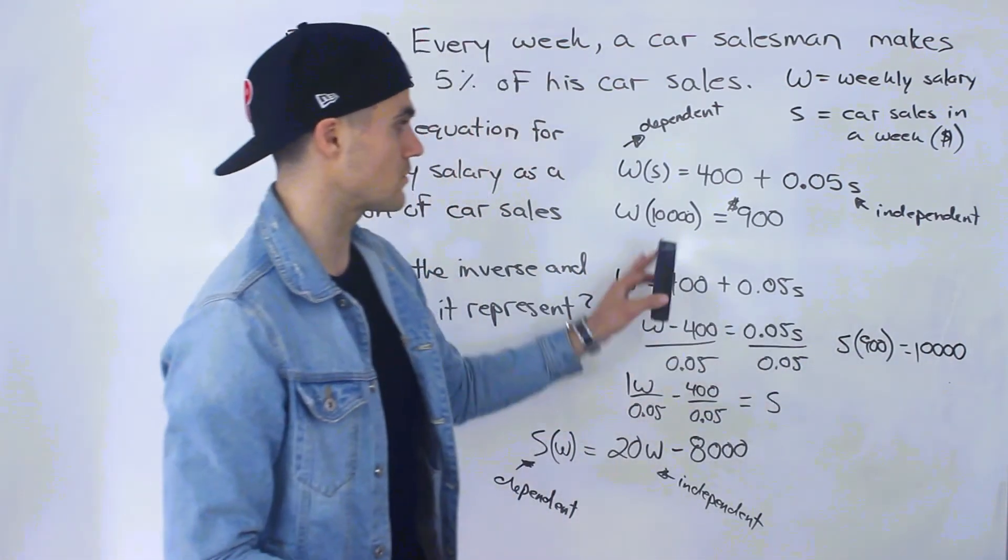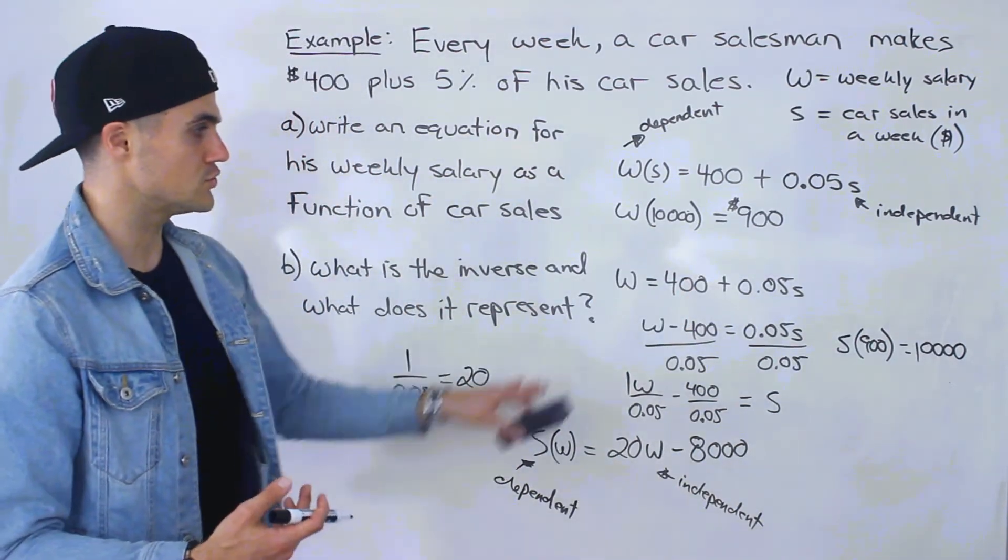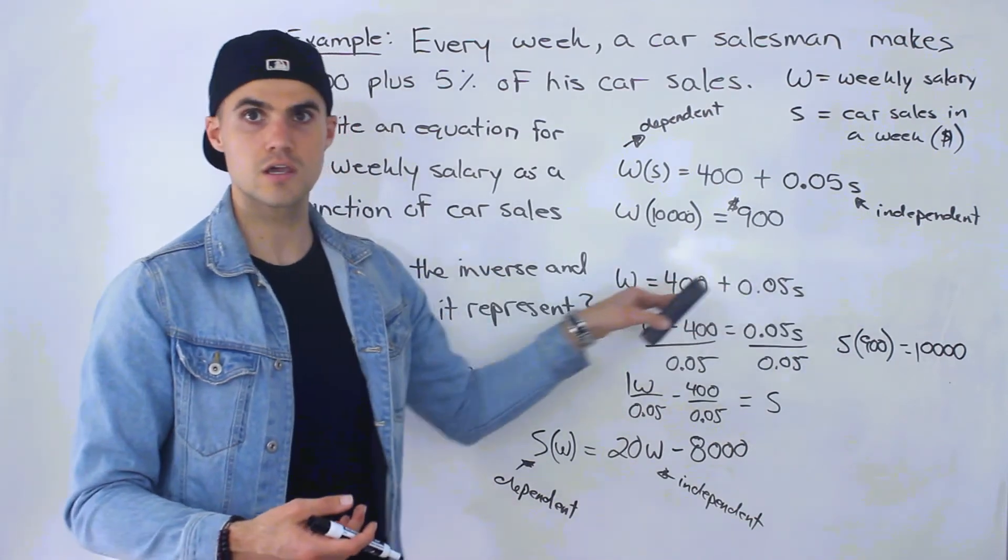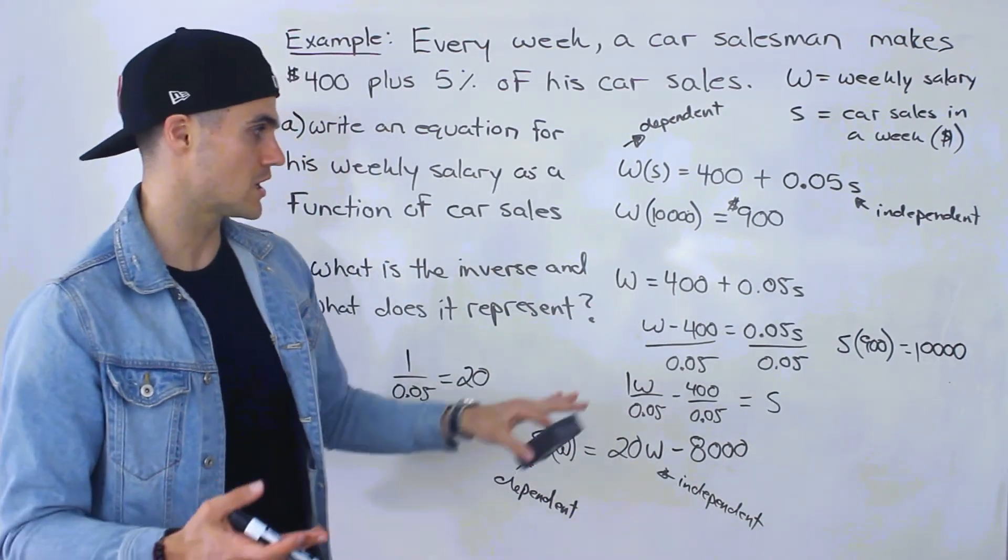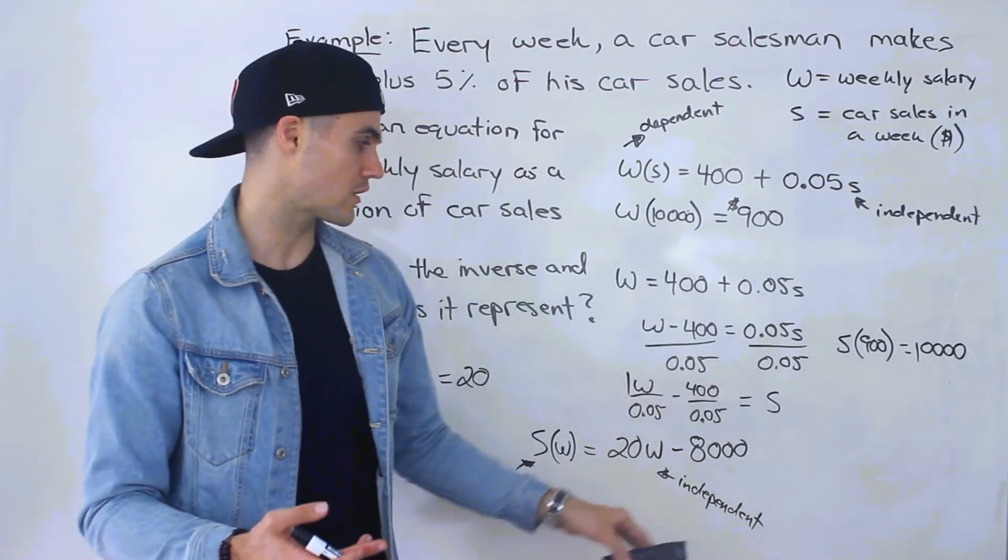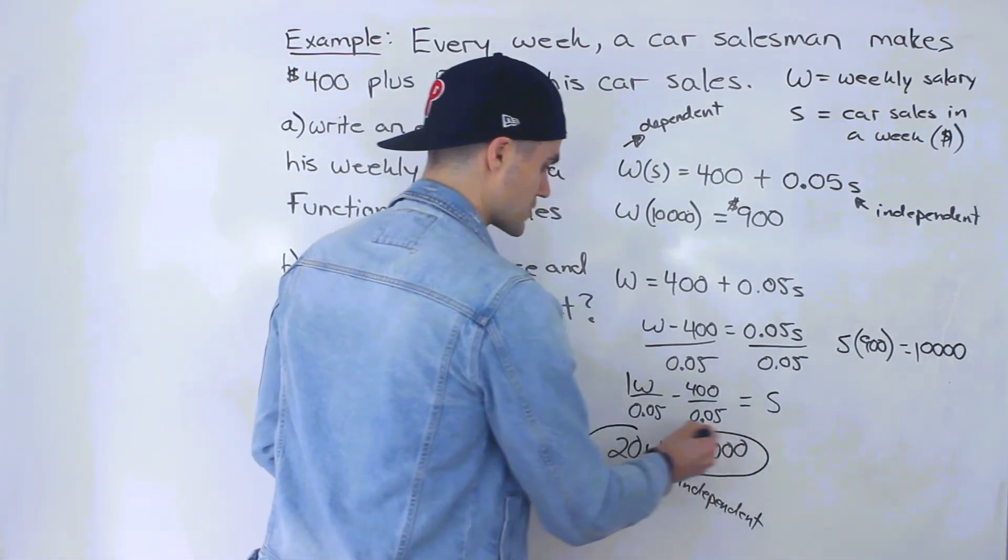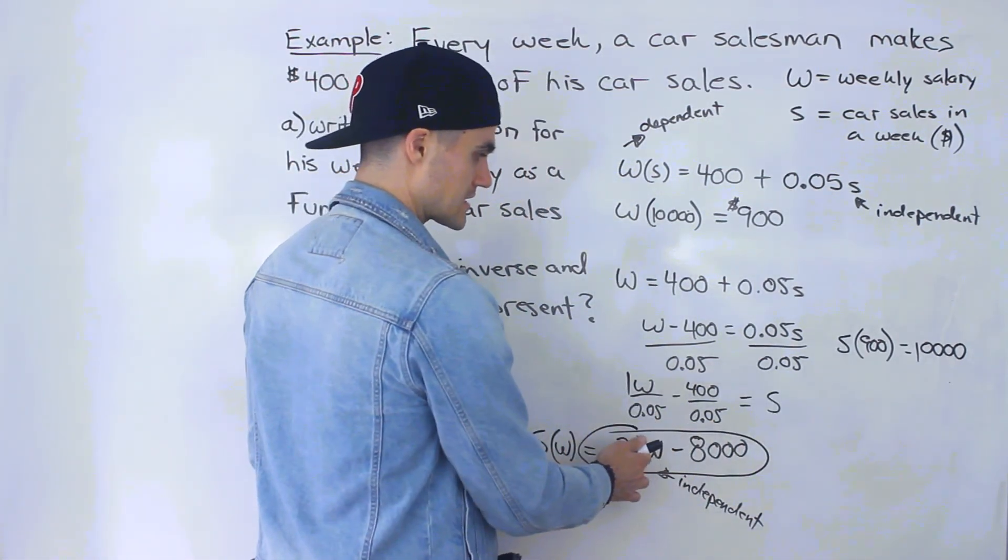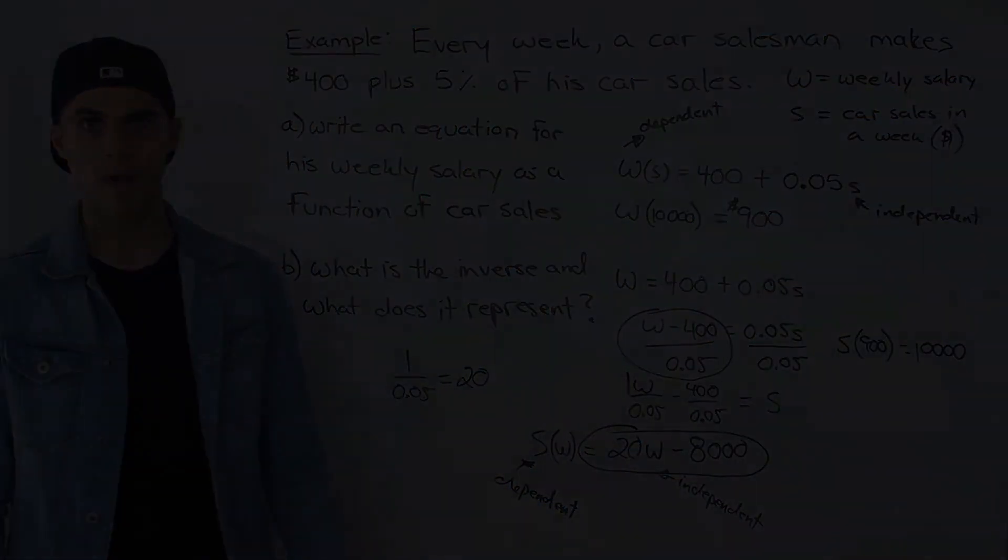Okay, so notice how it's just this inversed. So just remember, with word problems you don't switch the variables like you do with abstract equations. You keep the variables as they are, but you just isolate for the other variable. And when we isolated, we ended up getting this inverse function. And this is the exact same thing as this, just in a nicer format.